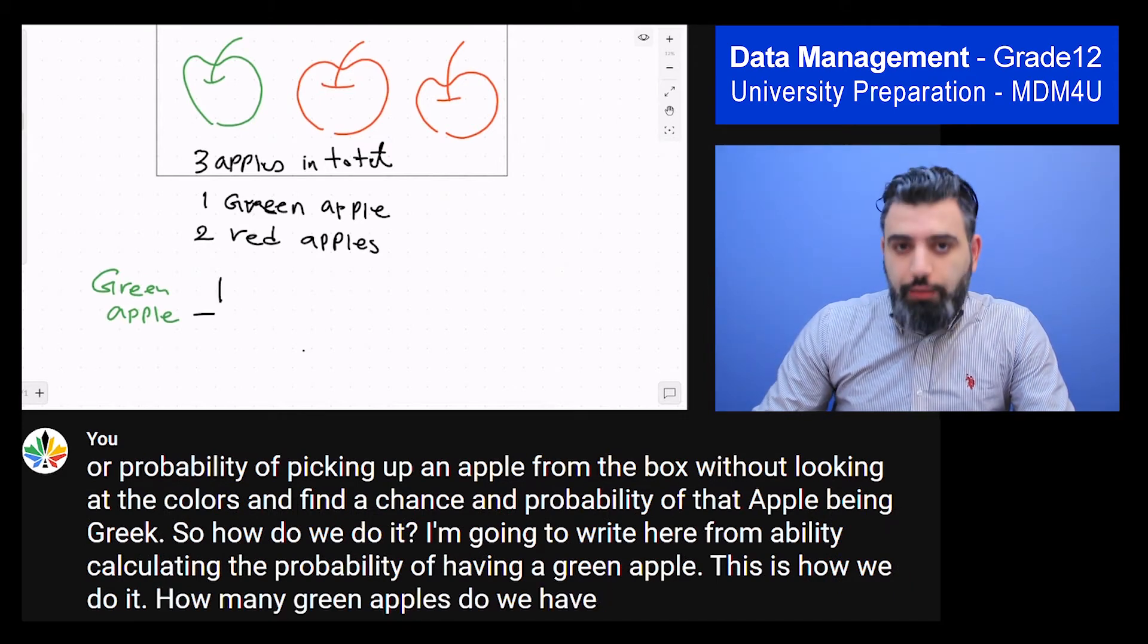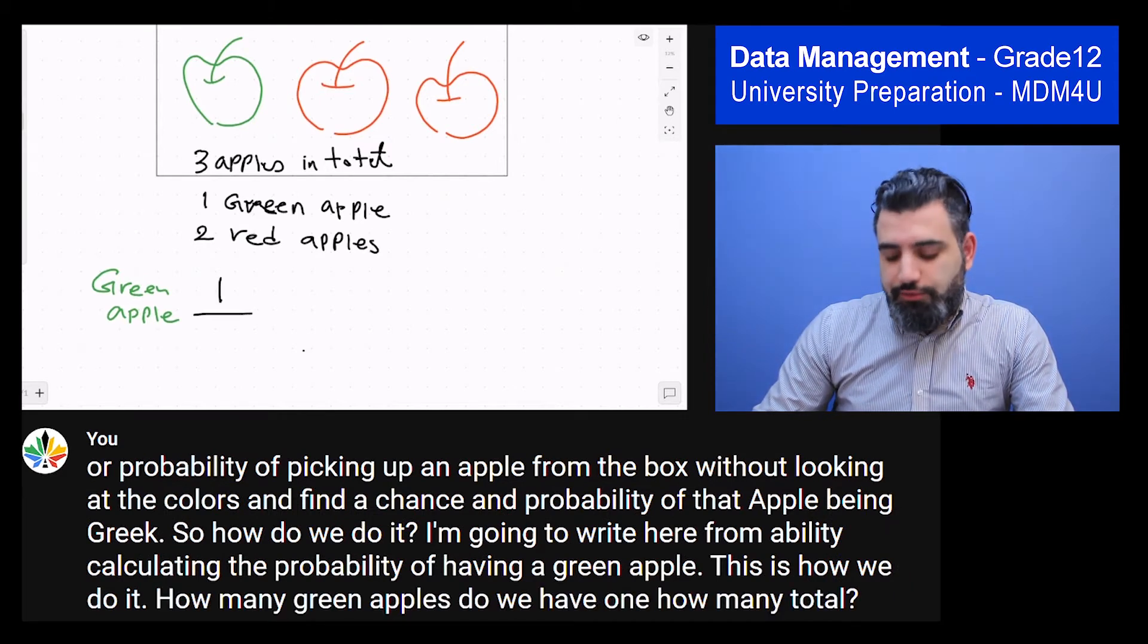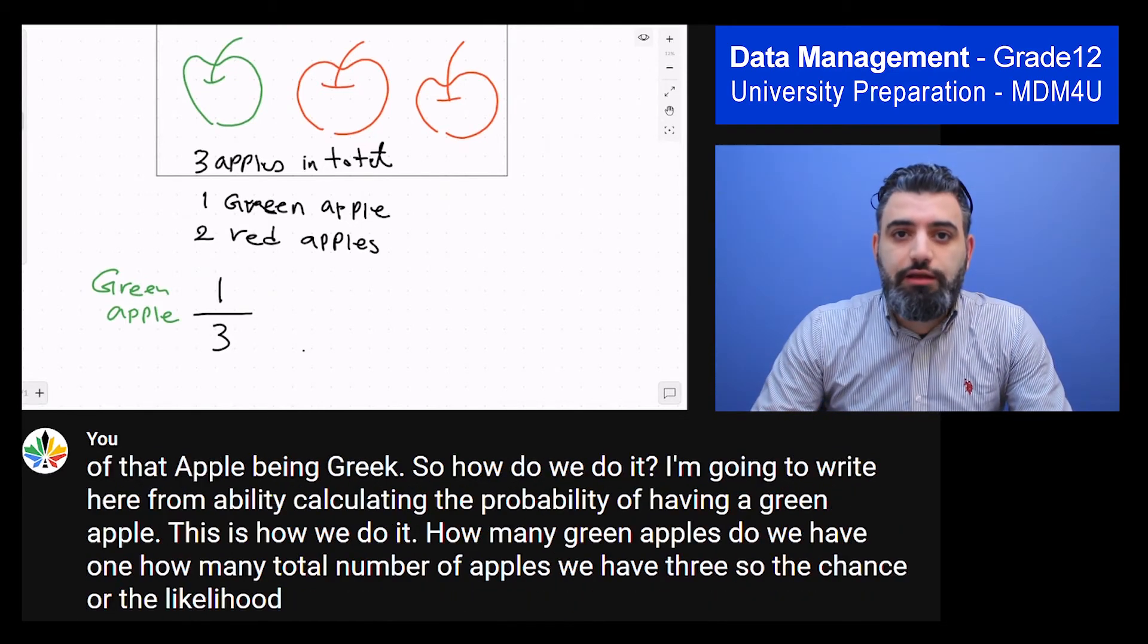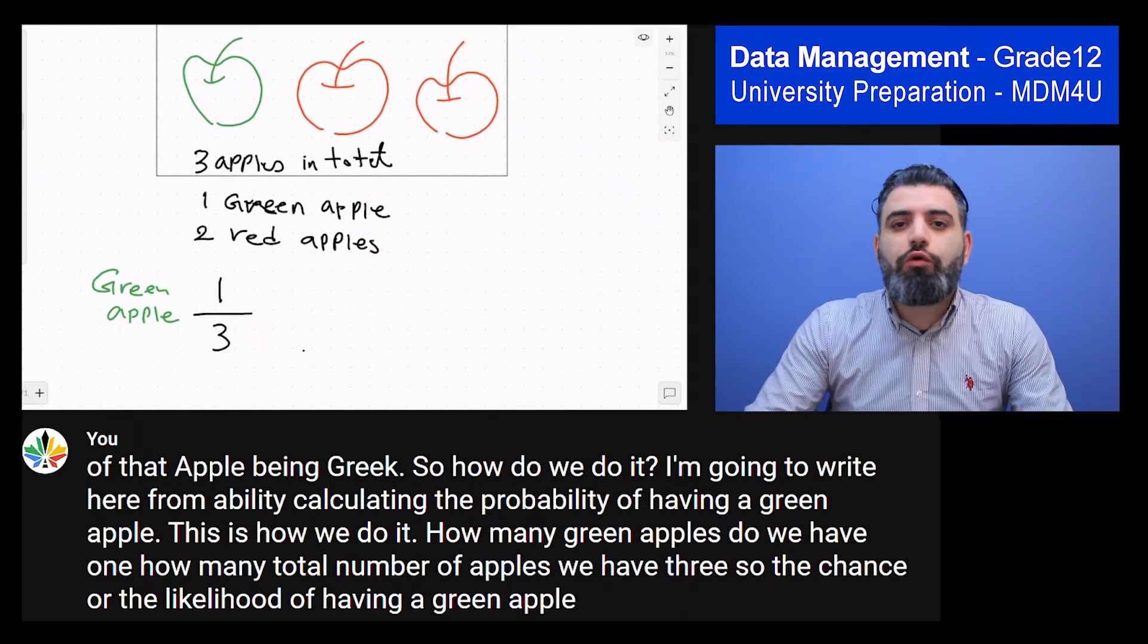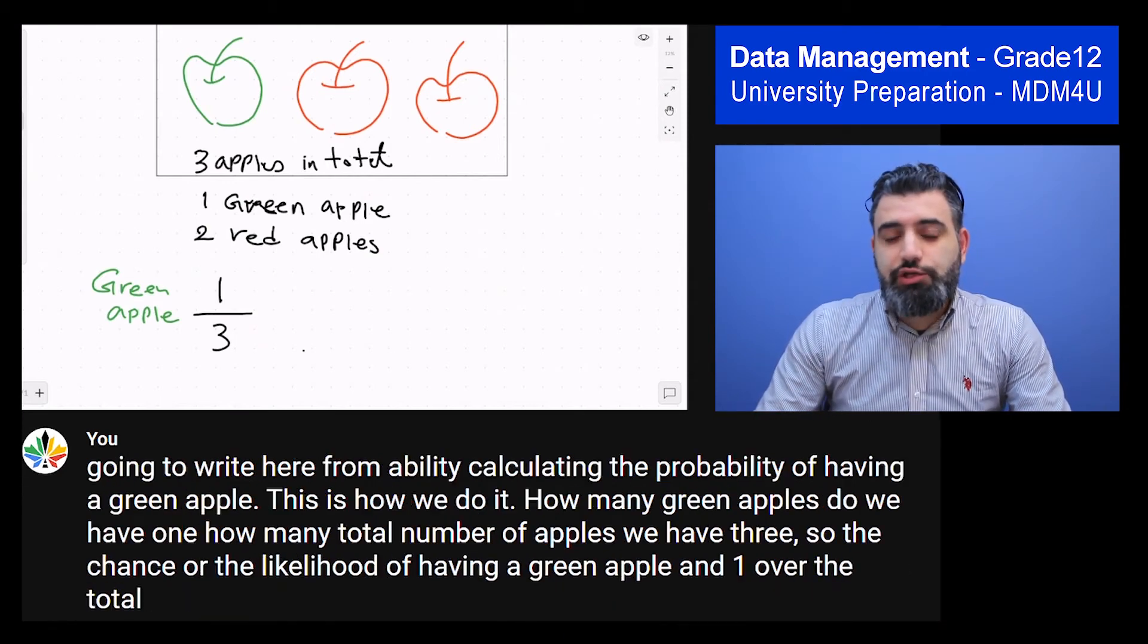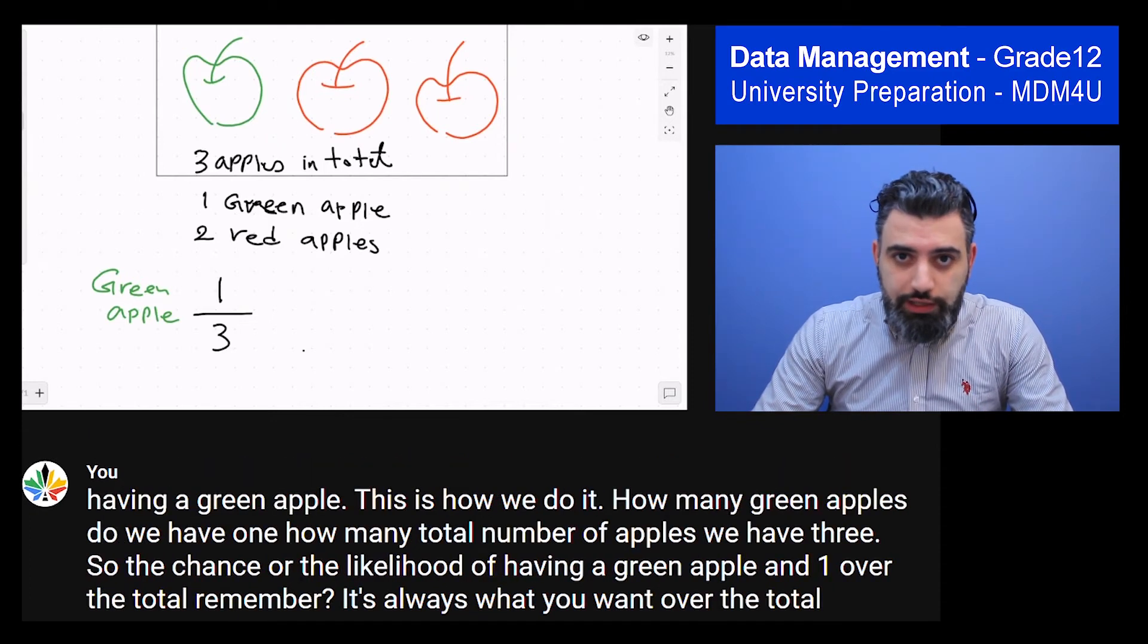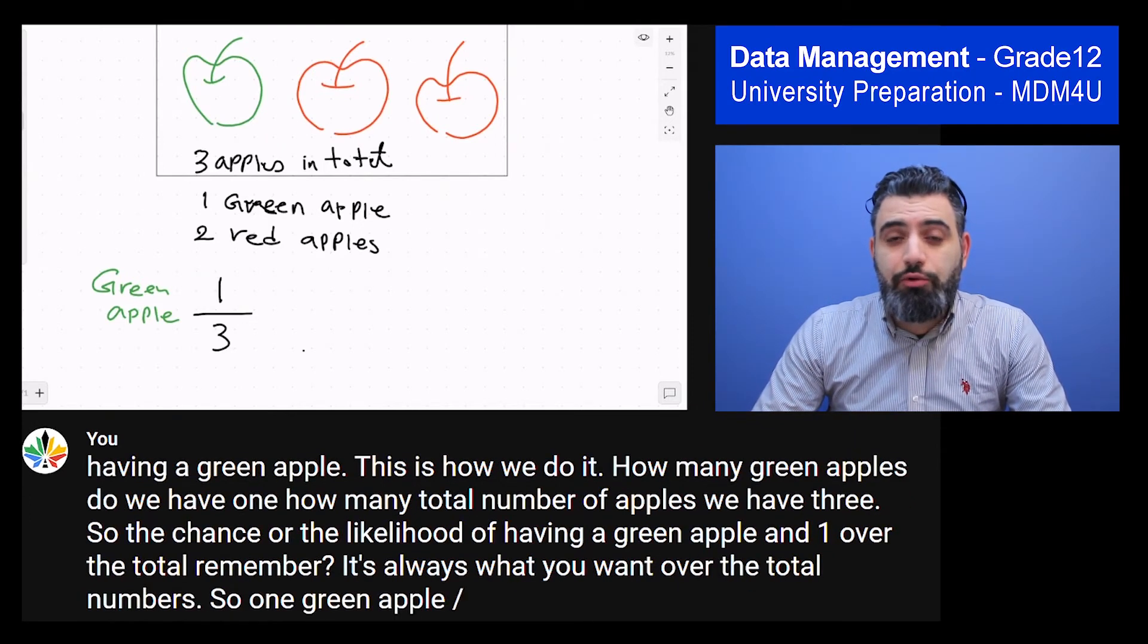How many total number of apples do we have? Three. So the chance or the likelihood of having a green apple is one over the total. Remember, it's always what you want over the total numbers. So one green apple divided by all three apples.